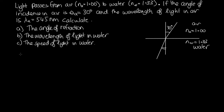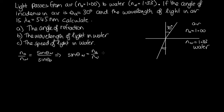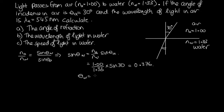Using Snell's law, n_air over n_water equals sin θ_water over sin θ_air. Rearranging, sin θ_water equals (n_air / n_water) × sin θ_air. Substituting in: n_air = 1.00, n_water = 1.33, and sin 30°, we solve to get θ_water equal to 22 degrees. So the angle of refraction is 22 degrees.